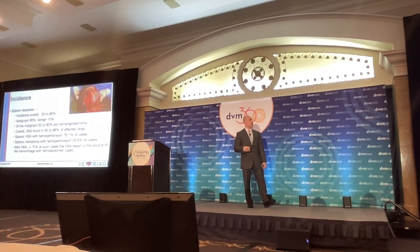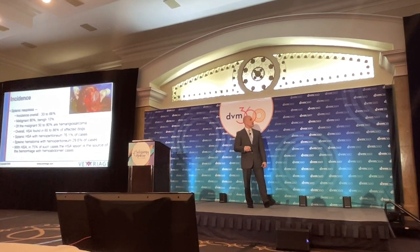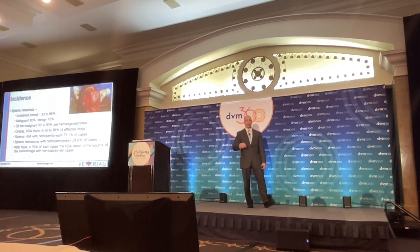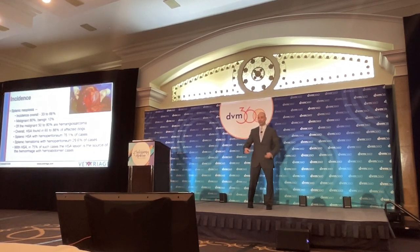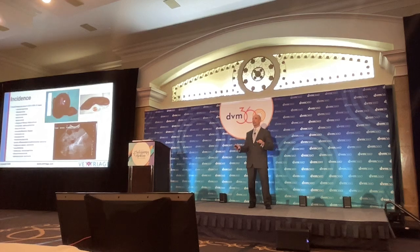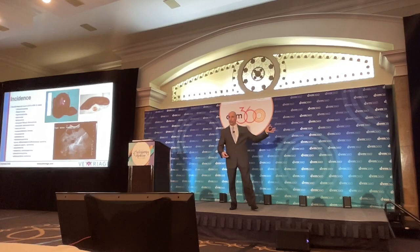Splenic hemangiosarcoma is responsible for hemoabdomen in 76% of cases, and splenic hematoma accounts for about 30% of the remainder. With hemangiosarcoma, in three quarters of cases the lesion is the source of hemorrhage. This slide is just a reminder that there are many other cancers of the spleen — it's not just hemangiosarcoma. We focus on it because it's so common and so devastating, but there is a long list of tumors.